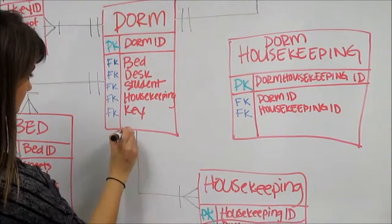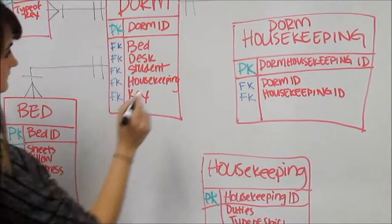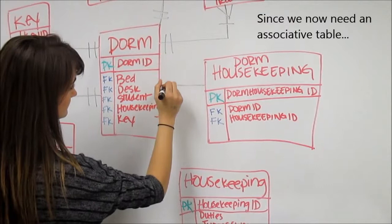When you connect the dorm and housekeeping entities, you will notice that they both have a one-to-many relationship. As we described earlier with associative tables, you cannot have this relationship, thus it is required to have an associative table. In this case, it is a dorm housekeeping entity.